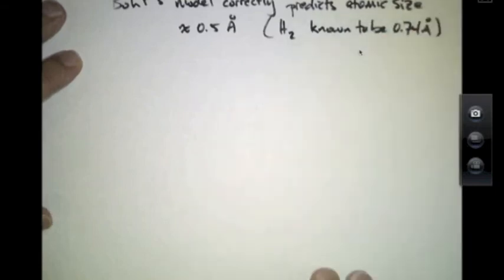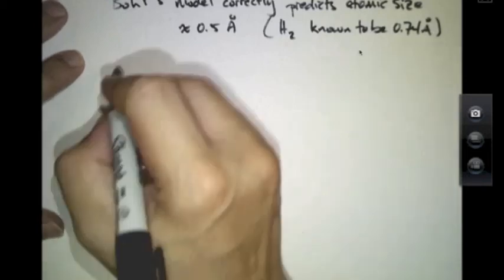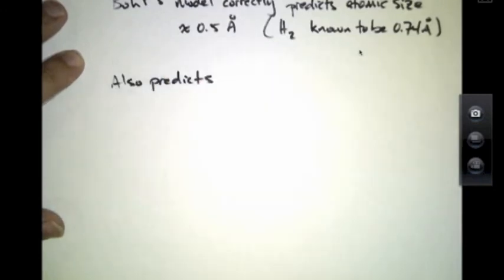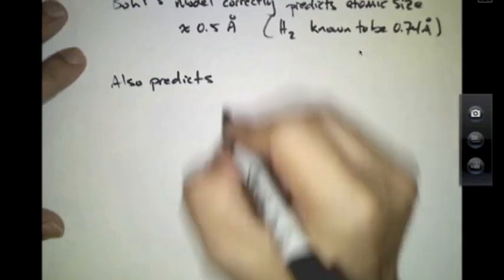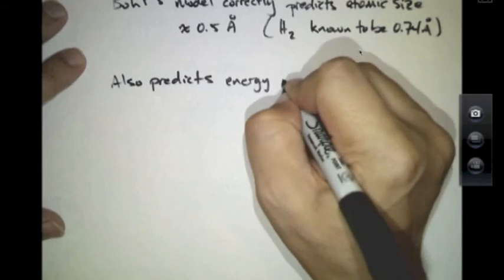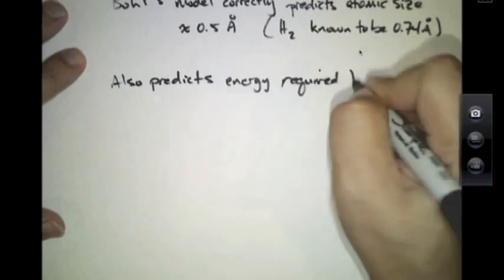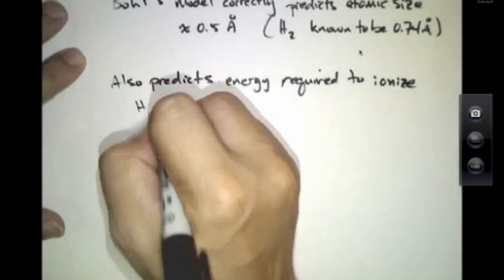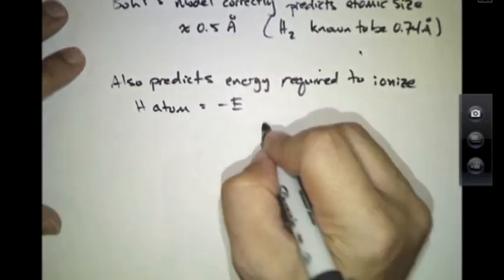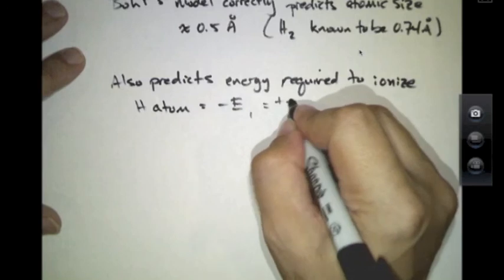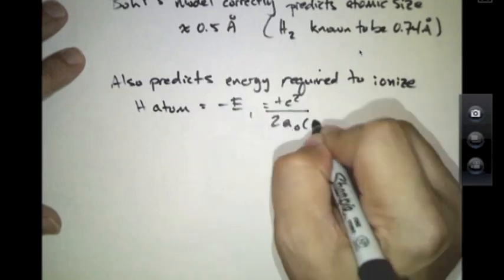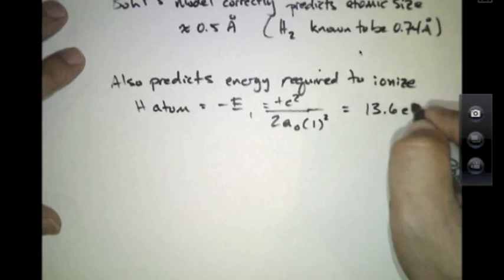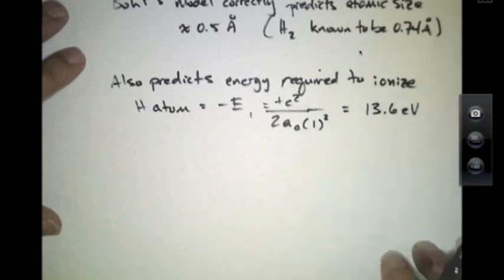The second important thing about Bohr's prediction is that it also predicts the energy required to strip an electron from a hydrogen atom, or to ionize it. That's equal to minus E₁, which equals plus e squared over 2A₀ times 1 squared, which if you put in the Bohr radius turns out to be 13.6 electron volts — a quantity that had already been measured.